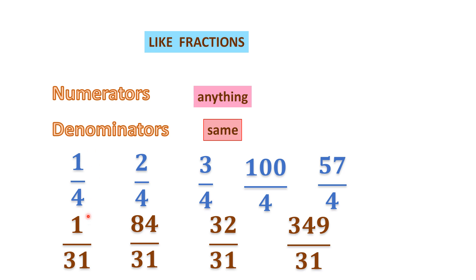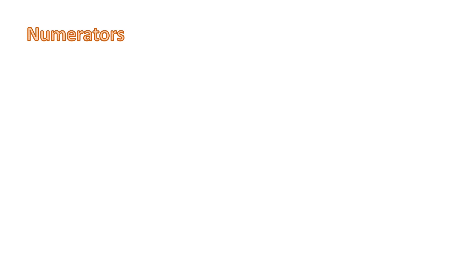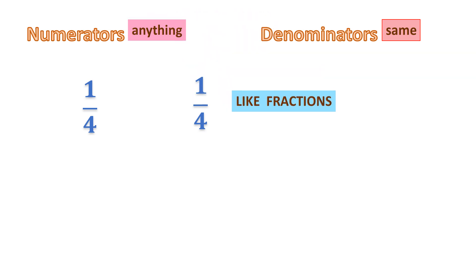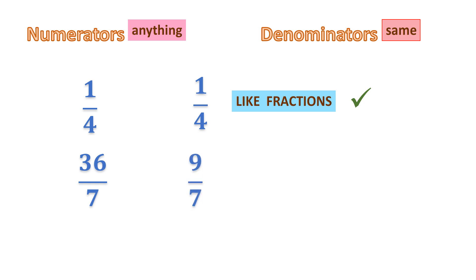1 over 4 and 1 over 31 are not like fractions. For like fractions, the numerators can be anything, but the denominators have to be the same. Take the fraction 1 over 4 and 1 over 4 — that is a like fraction. What about 36 over 7 and 9 over 7? The denominator is 7 for both, and the numerators are different — numerators can be anything. So yes, they are like fractions.